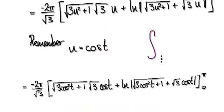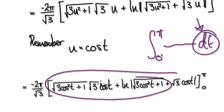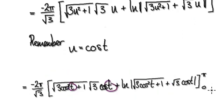Originally we were trying to integrate from 0 to π dt. We were trying to integrate it in terms of t. So now that everything is back in terms of t, we can now integrate it from 0 to π.